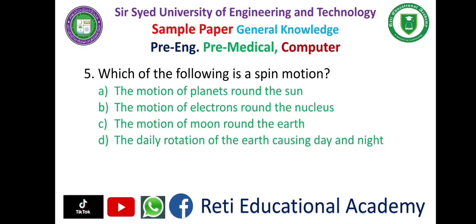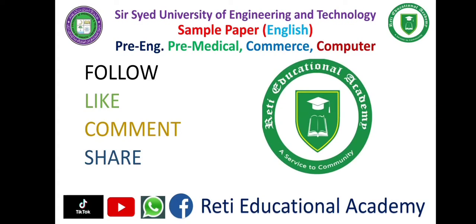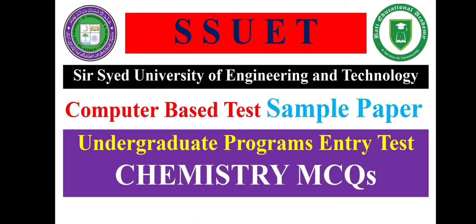Question number 5: Which of the following is a spin motion? — A. The motion of planets around the sun, B. The motion of electrons around the nucleus, C. The motion of the moon around the earth, D. The daily rotation of the earth causing day and night. The correct answer is D: The daily rotation of the earth causing day and night.